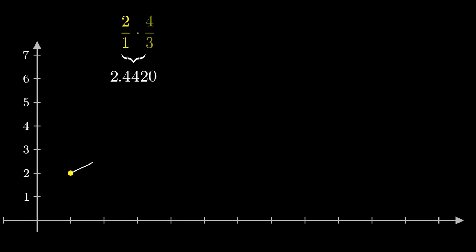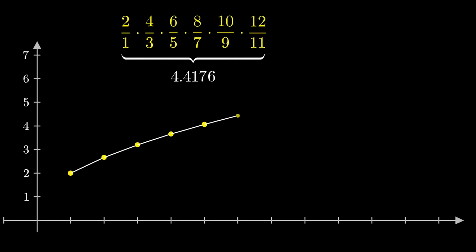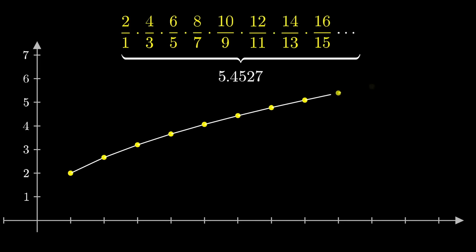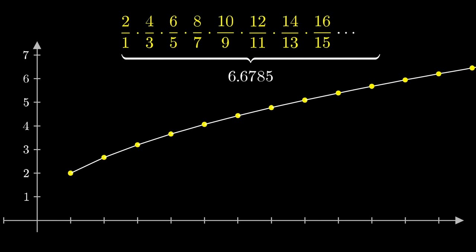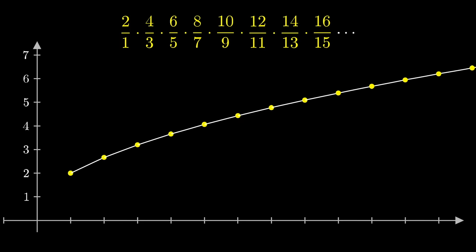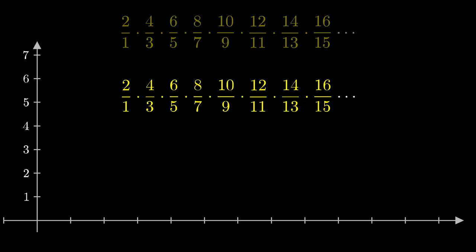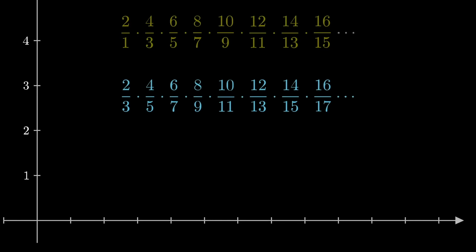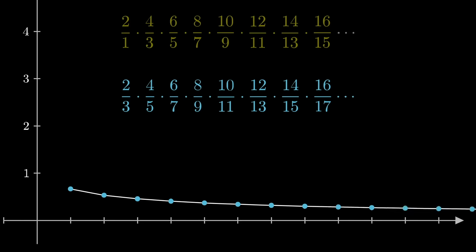Consider the product 2/1 × 4/3 × 6/5, on and on, where we include all even numbers as numerators and odd numbers as denominators. All the factors here are bigger than 1, so the result keeps getting bigger and bigger — it eventually gets bigger than any finite limit, so in that sense it just blows up to infinity. On the other hand, if you shift things over slightly, looking at 2/3 × 4/5 × 6/7, on and on, all of those factors are less than 1, so the result keeps getting smaller and smaller, approaching zero.